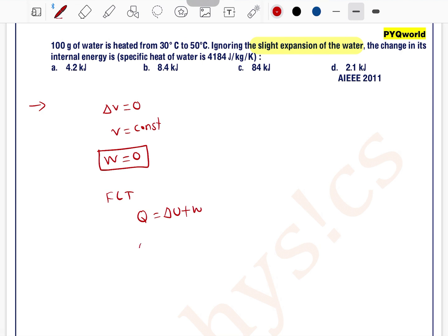Now the change in internal energy is ΔU = Q, which can be written as mc∆T.